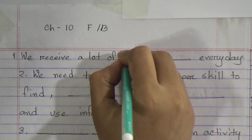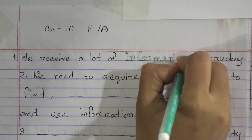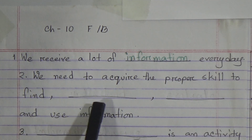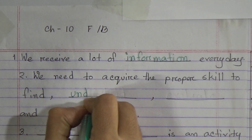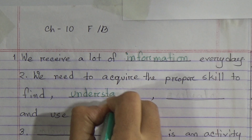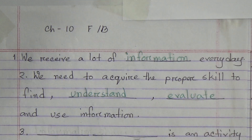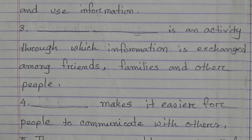Now come to fill in the blanks. First one: we receive a lot of dash every day — that will be 'information.' We receive a lot of information every day. Second one: we need to acquire the proper skill to find dash dash and use information — that will be 'understand and evaluate.' Third one: dash dash is an activity through which information is exchanged among friends, families and other people — that will be 'information sharing.'